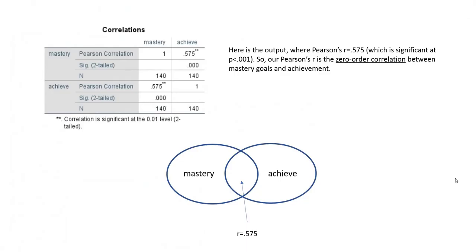Using a Venn diagram, if we have the circle for mastery goals and a circle for achievement, the Pearson's correlation is going to reflect the overlap between those two circles, and the same would be true if we were looking at the relationship between interest and achievement.